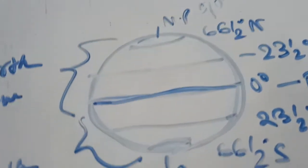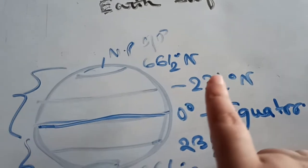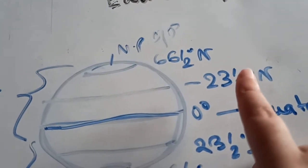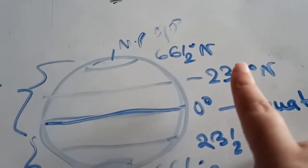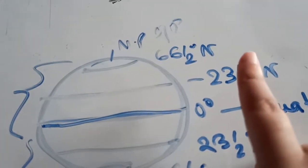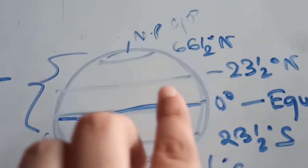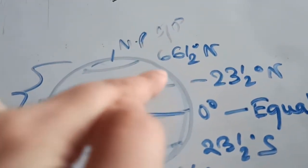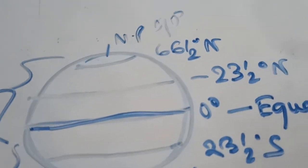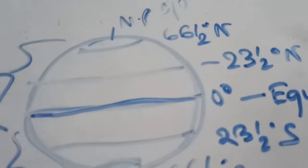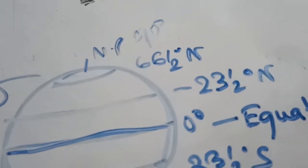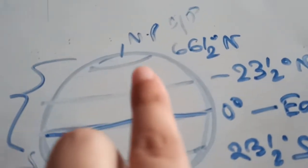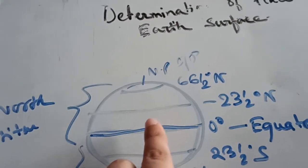The next important latitude is 23.5° north. The other name for the 23.5° north latitude is the Tropic of Cancer. It lies horizontally at 23.5° north of the equator, right in the northern hemisphere. It is also an imaginary line, smaller than the equator in comparison to the length of the equator.